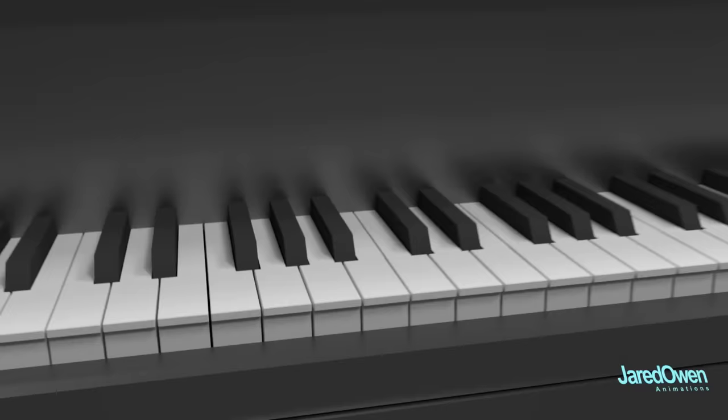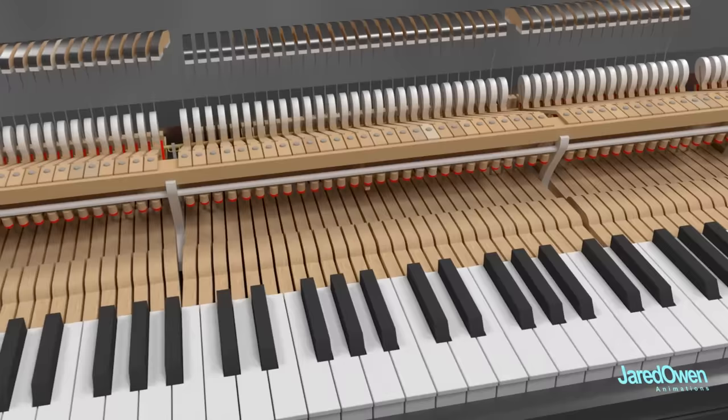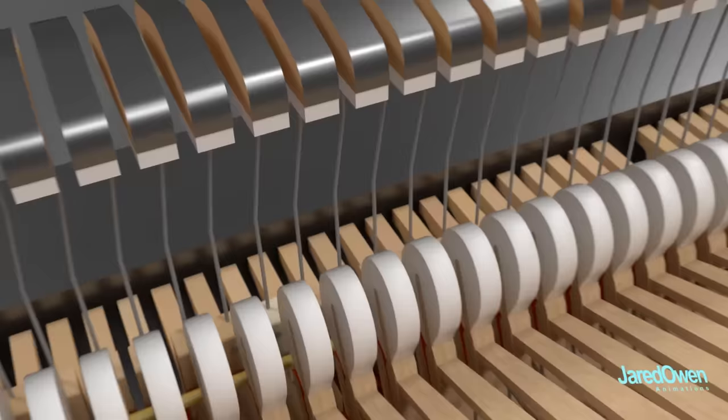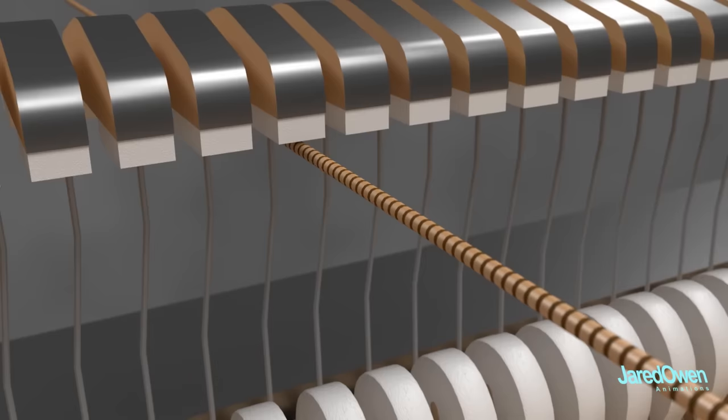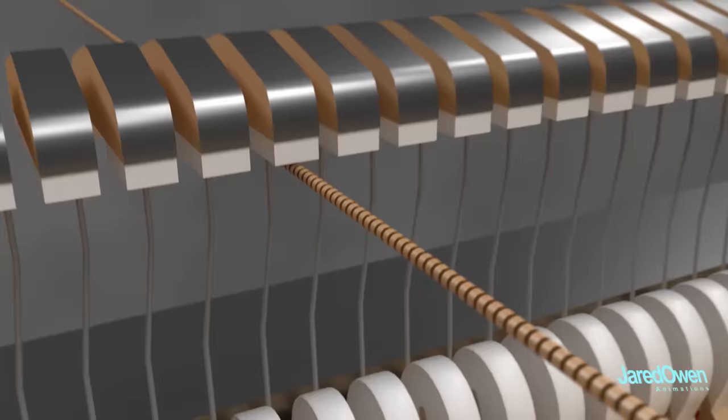Each key is actually a long lever which you normally can't see. By pressing a key, there's a chain reaction that causes a hammer to strike the strings. Most keys strike three strings at a time. For lower notes, they strike two strings, and the lowest notes only one string. The lower notes don't have as many strings because the strings are thicker, so they produce more sound.